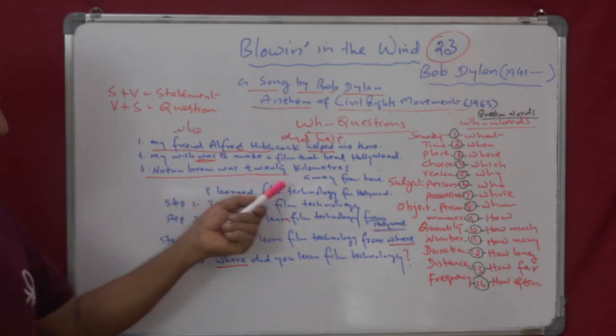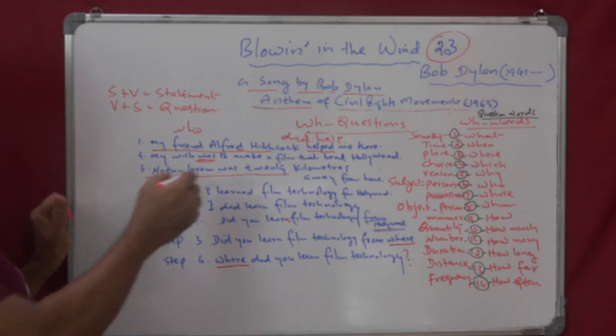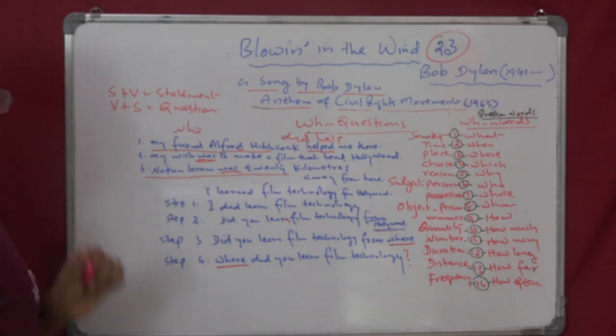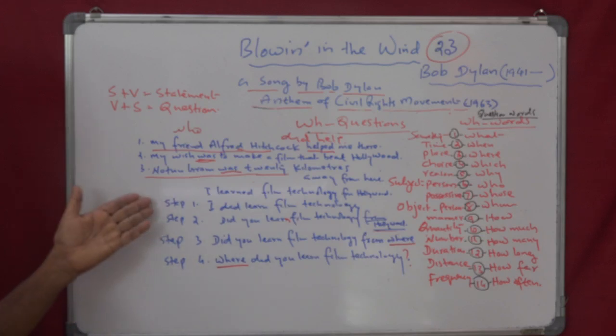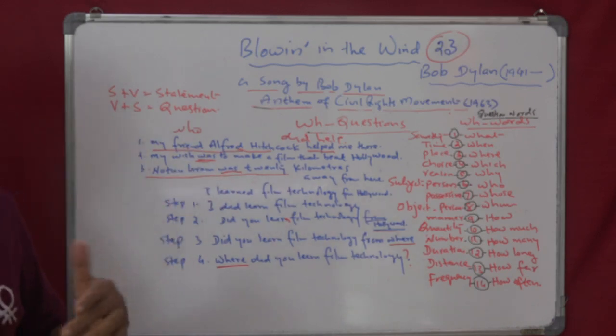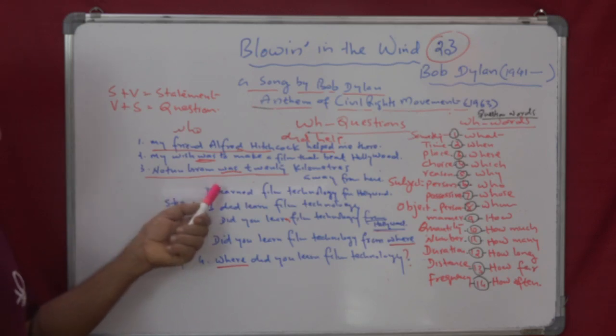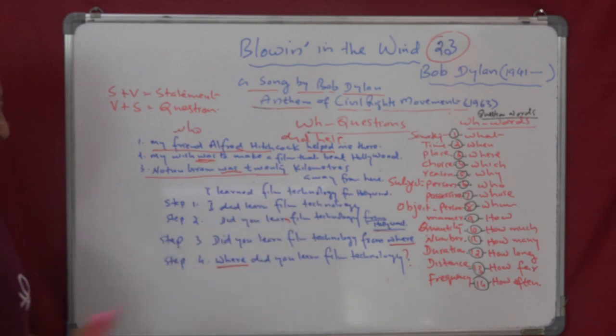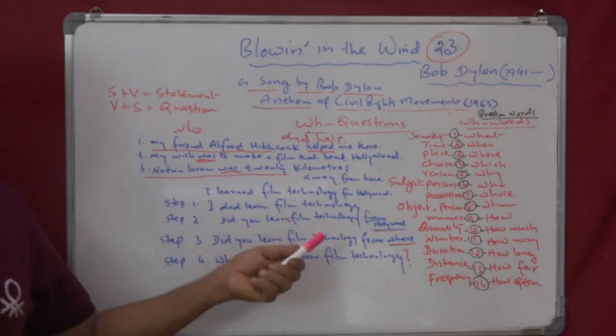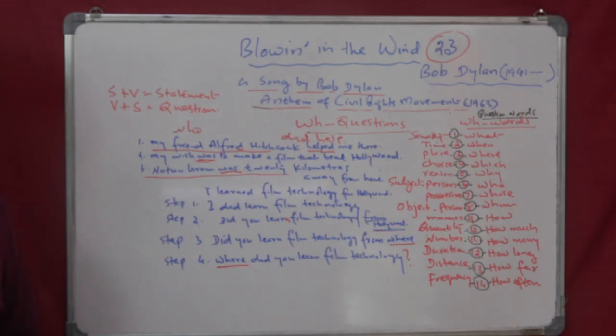Next, Nottungram was 20 kilometers away from here. Then, again, you have got only an auxiliary here. Now, no need of inserting do. So, just inversion will do. And that would be, what is the question word? You have to use distance. It was 20 kilometers. So what is the question word for distance? The question word for distance is how far. How far was Nottungram from here? 20 kilometers.